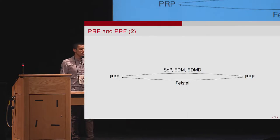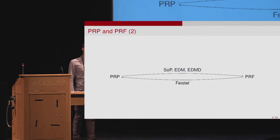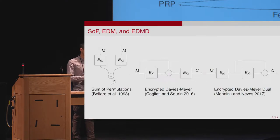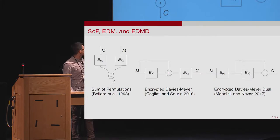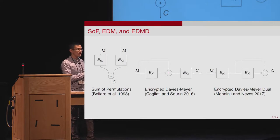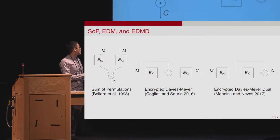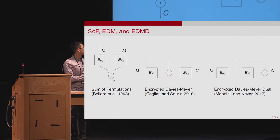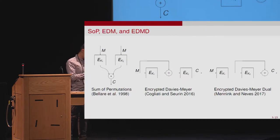People soon realized that we actually need the opposite construction, which means we want to build a PRF from PRPs. In the past years, various approaches of turning a PRP into a PRF were introduced: the Sum of Permutations by Bellare et al. in 1998, the Encrypted Davies-Meyer by Cogliati and Seurin in 2016, and the Encrypted Davies-Meyer² by Mennink and Neves in 2017.